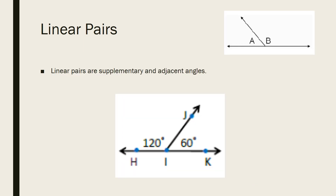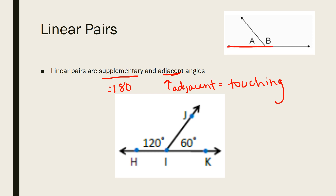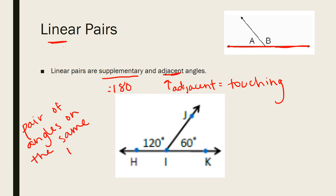Our last definition for this video is linear pairs. Linear pairs are supplementary — they equal 180 degrees — and they're also adjacent, meaning touching. So this is a supplementary angle pair that's on the same line. A linear pair is a pair of angles on the same line. For example, 120 and 60 are touching angles on the same line that add up to 180 degrees. So 120 plus 60 equals 180 — that's what it means to be a linear pair.